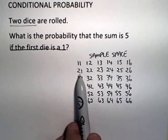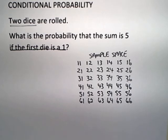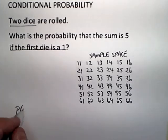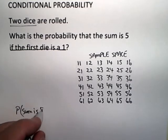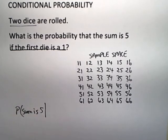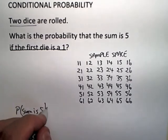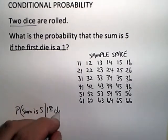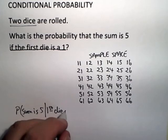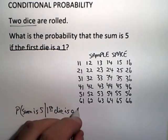In any case, you end up with a 6 by 6 array, which is a sample space of 36 equally likely possibilities. And the question they ask is a conditional probability problem. What is the probability that the sum is 5, given that the first die came up a 1?